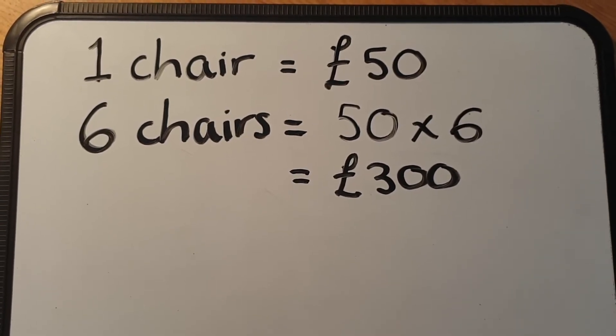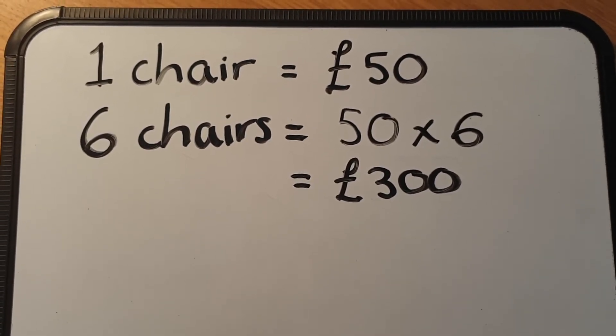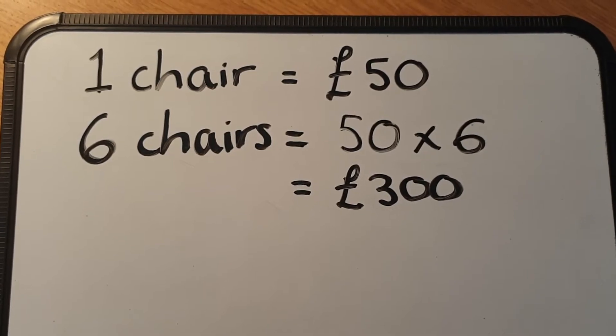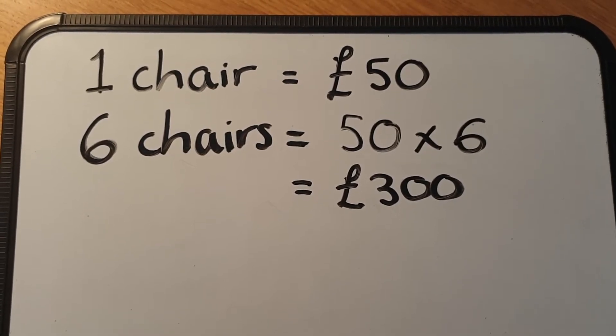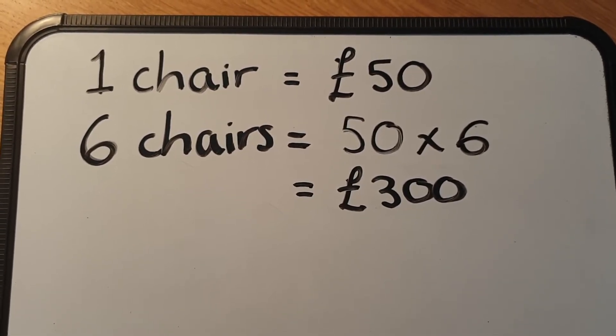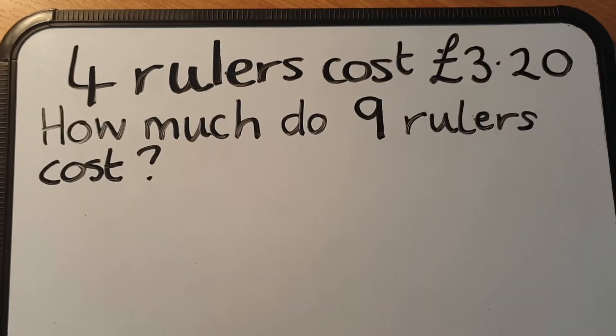That was easy because we knew the cost of one item. If you don't know the cost of one item, first you have to go and find that out before you do the rest of the question.